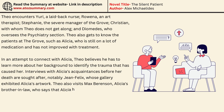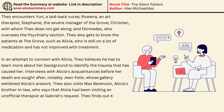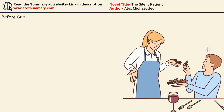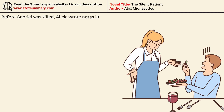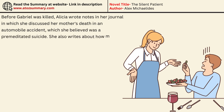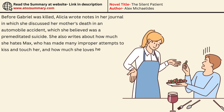Theo also visits Max Berenson, Alicia's brother-in-law, who says that Alicia had been visiting an unofficial therapist at Gabriel's request. Theo finds out a lot about Alicia's difficult upbringing from her disagreeable Aunt Lydia and her cousin Paul when visiting Alicia's family home. Before Gabriel was killed, Alicia wrote in her journal about her mother's death in an automobile accident, which she believed was a premeditated suicide. She also writes about how much she hates Max, who made many improper attempts to kiss and touch her, and how much she loves her husband.